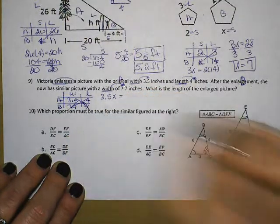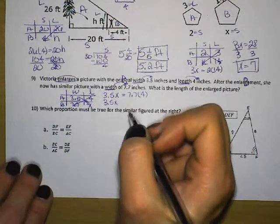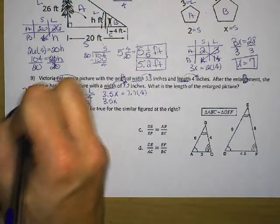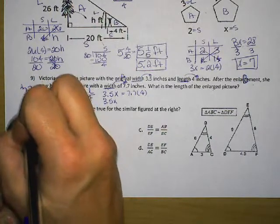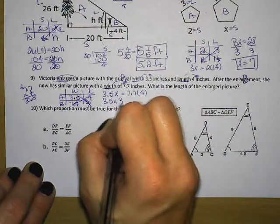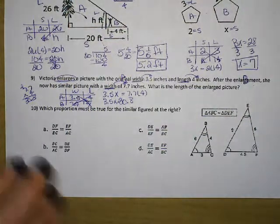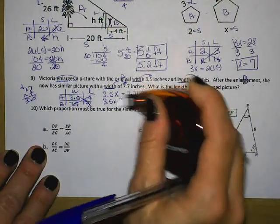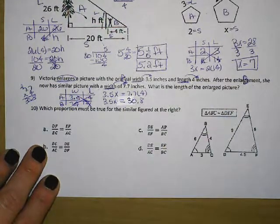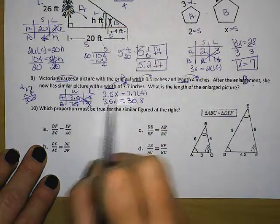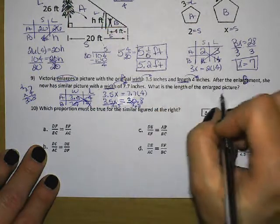You are going to cross multiply and divide. You get 3.5 times s equals 7.7 times 4. Let's see, 7.7 times 4, what times 7 is 28, looks like it's 30.8. Let's take a moment and fix that. Don't want to forget our equal sign because it will keep us from being able to solve the problem correctly. And don't forget, you always divide by the coefficient, which is the number next to the variable. So I'm going to divide both sides by 3.5.